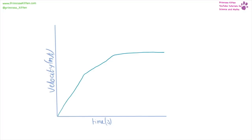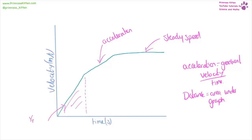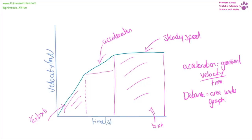Velocity-time graphs look very similar to distance-time graphs but are different. The flat section now means moving at a steady speed. When they are increasing, the object is accelerating, so acceleration equals the gradient — that's velocity over time. If we want to work out the distance travelled, that's the area under the graph. A triangle section gives half times base times height. A rectangle section gives base times height. A section that is a trapezoid is a triangle plus a rectangle plus a triangle — base times height plus half times base times height.